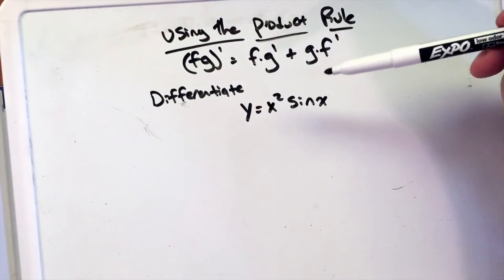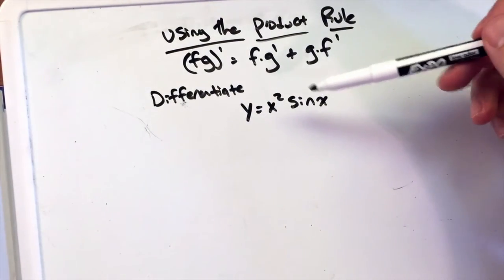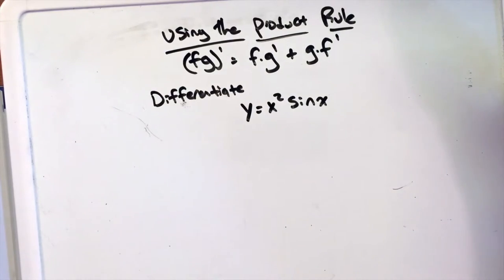So in this video we want to differentiate y equals x squared times the sine of x. I'm going to be using the product rule to do this.